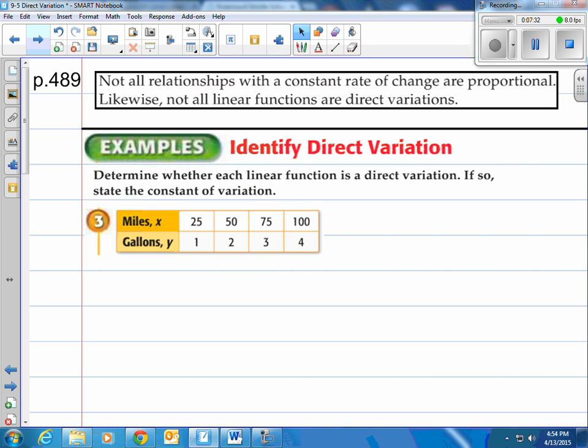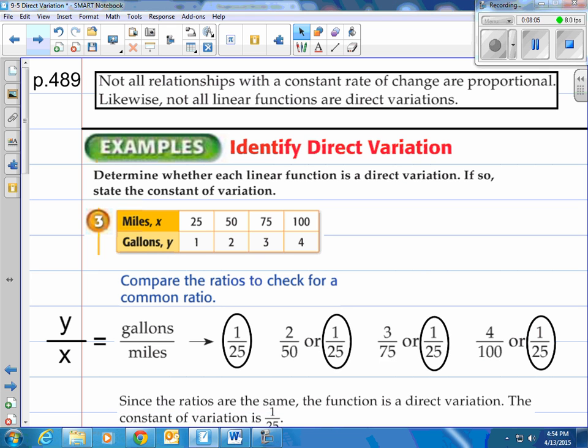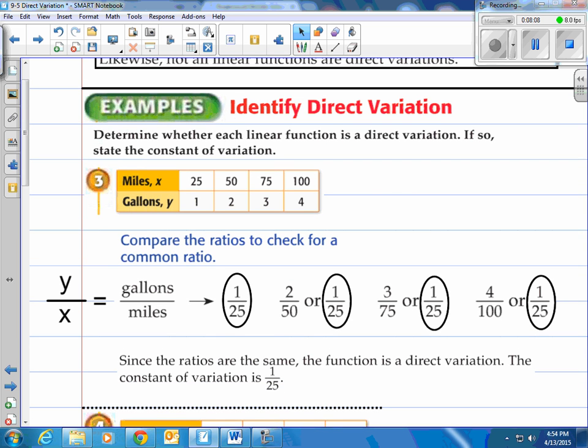Here you have a nice table with information where it says miles driven and how many gallons you have used. All we have to do is compare the ratios to check for common ratio. We've done this before when we were checking for proportional or non-proportional. So what we do is take your y divide by your x. Real simply take your gallons divide by miles. So we have 1/25th, then we have 2 divided by 50 which is reduced to 1/25th, 3 divided by 75 is 1/25th, and 4 divided by 100 is also 1/25th. So what would we say? Since the ratios are the same, the function is a direct variation. The constant of variation is that 1 over 25. It's the same.